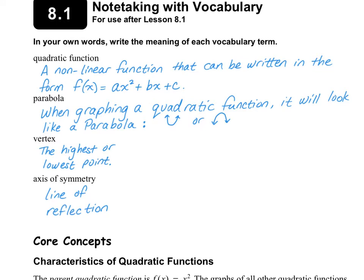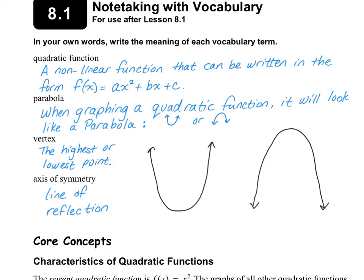The vertex is either the highest or the lowest point, and the axis of symmetry is the line of reflection. For example, if we take a look at this graph, the vertex is the highest or the lowest point. On the graph on the left, the vertex would be down here — this is the vertex.